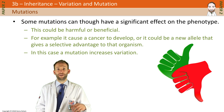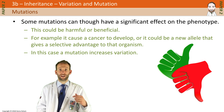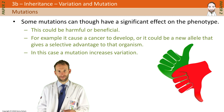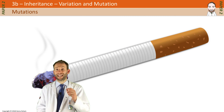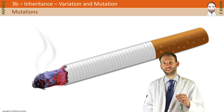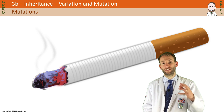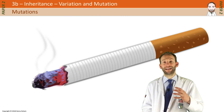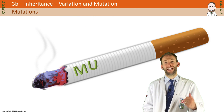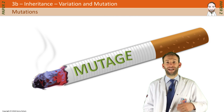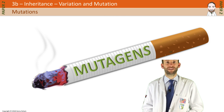If mutations occur in body cells then usually the body cell will die and it won't be passed on. However, if a mutation occurs in a sex cell, then it could be passed on to the next generation. Mutations are random events, but their occurrence can be increased by ionizing radiation such as UV light or X-rays, and by chemicals called mutagens, which you get in cigarettes and things like mustard gas.